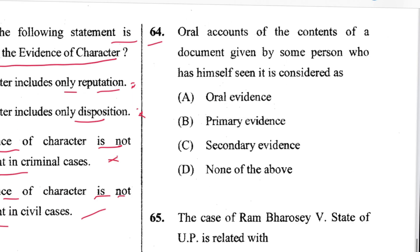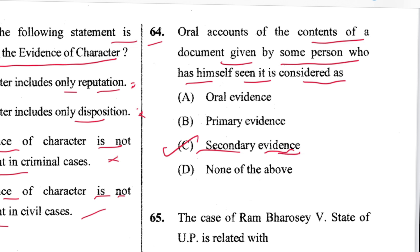Question 64: An oral account of the contents of a document given by a person who has himself seen it is considered secondary evidence. C is the answer. This is provided in Section 63 of the Evidence Act; primary evidence is in Sections 62 and 64.